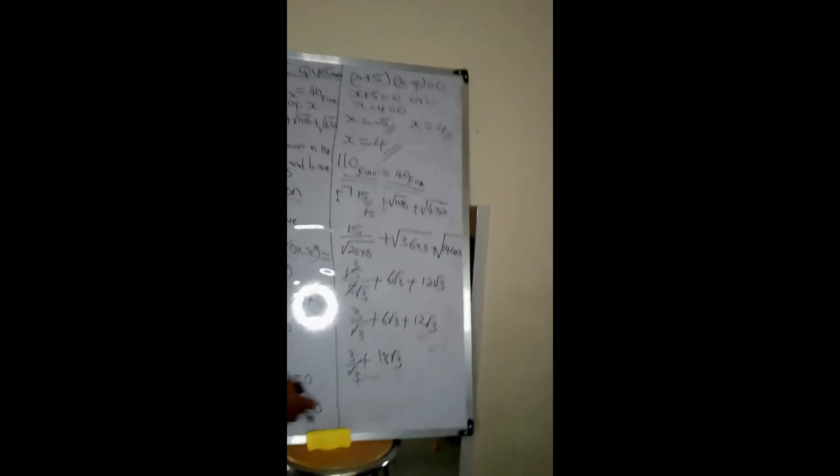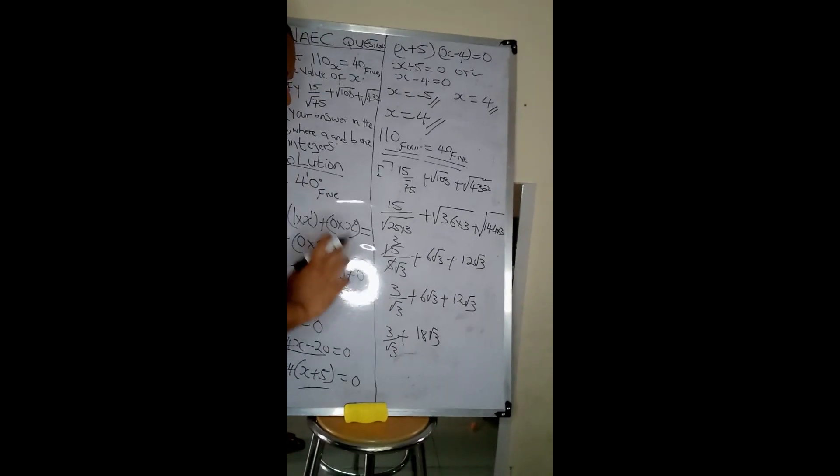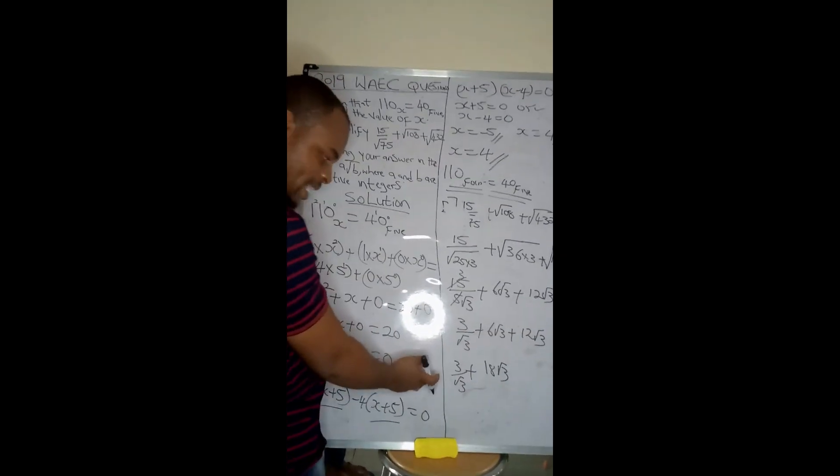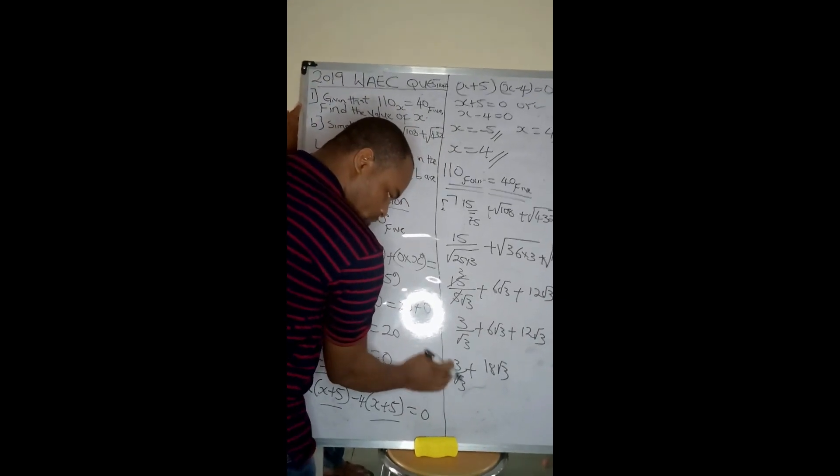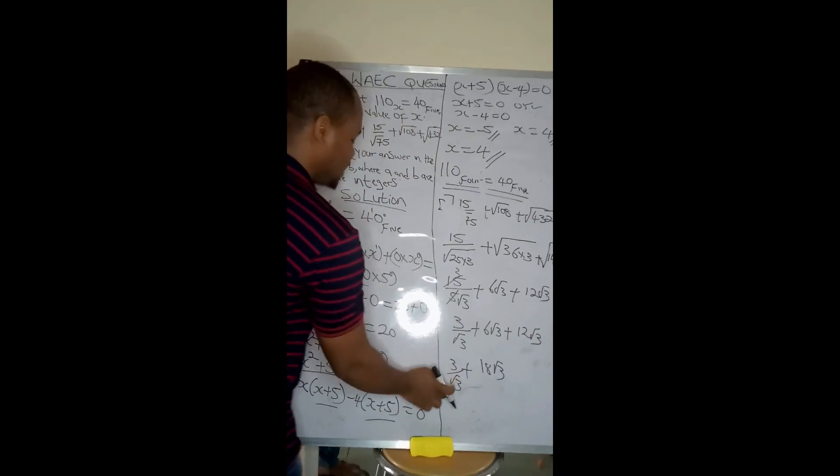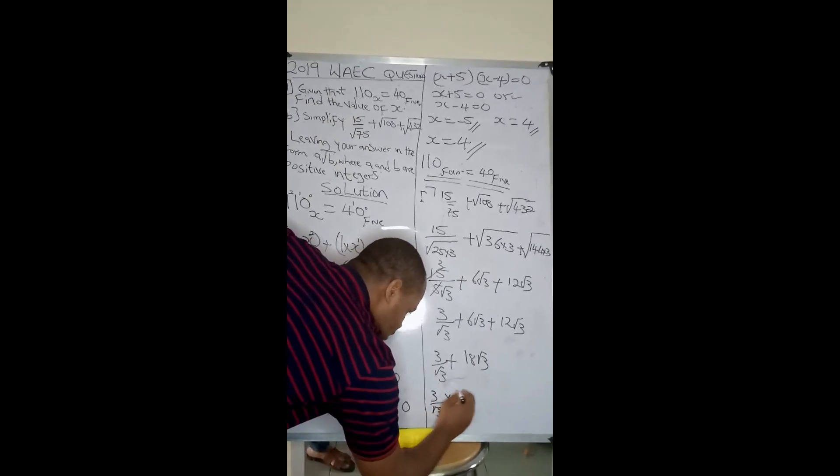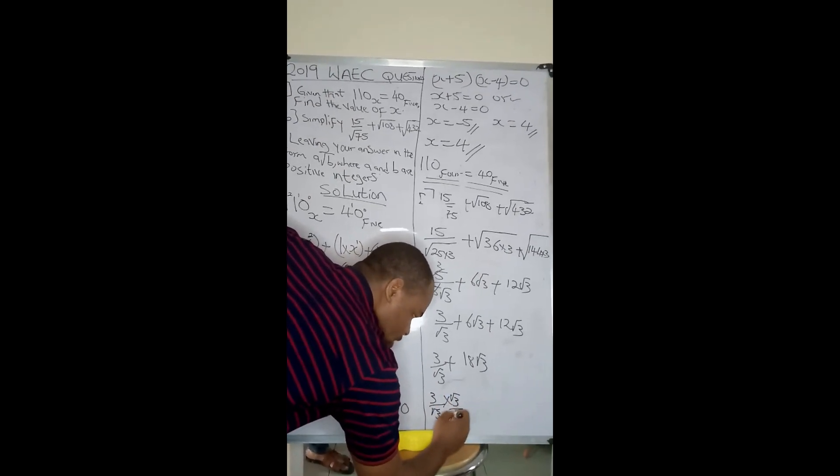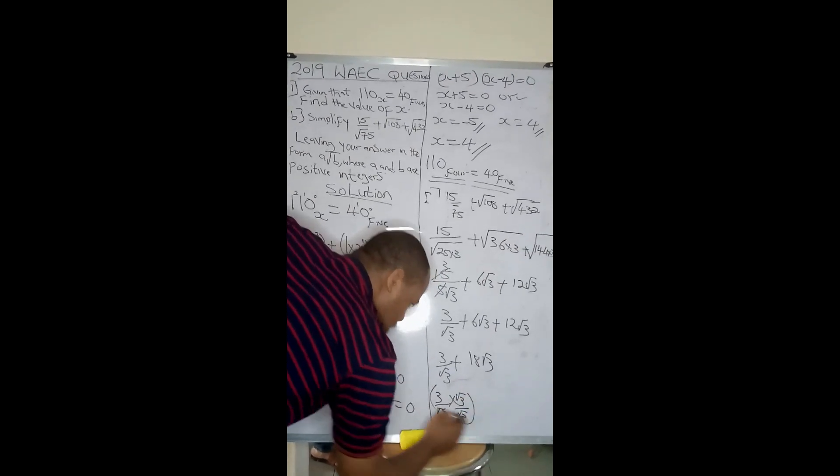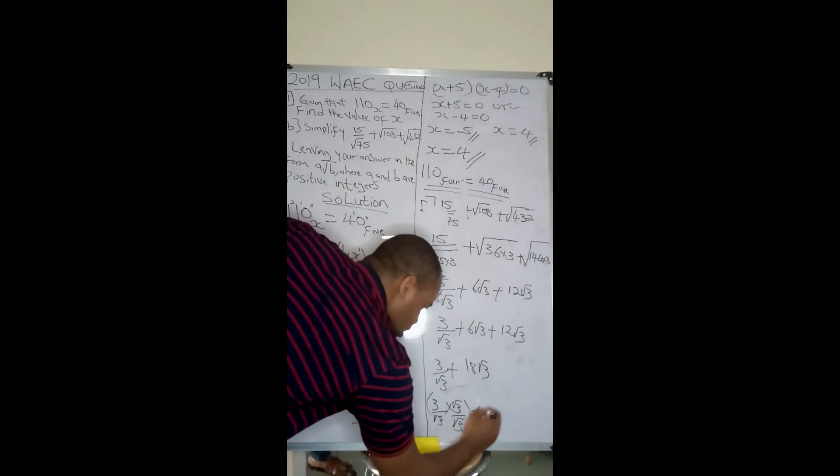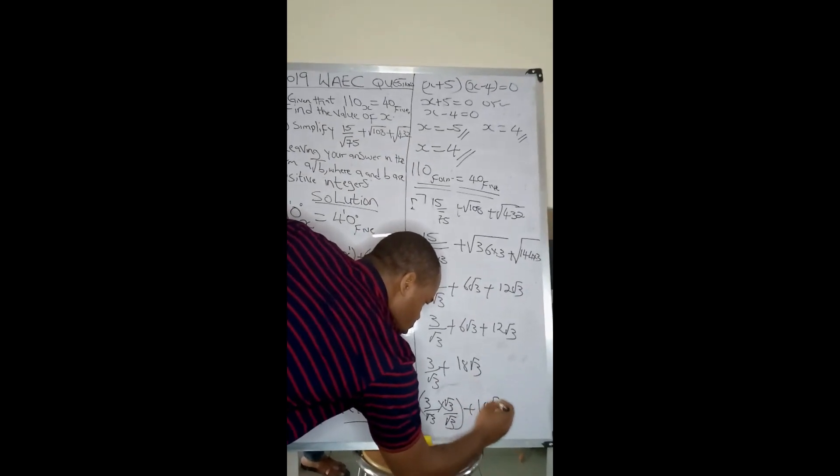Remember when we did rationalization of surds? We can simplify this further. To simplify this 3 over root 3, I'll have 3 over root 3 times root 3 over root 3. Remember when we were doing simplification of surds, every time I have here is still the same thing as this, plus 18 root 3.